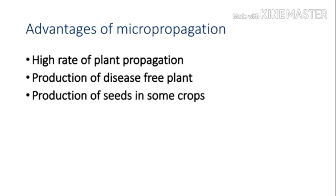The third point is production of seeds in some crops. Through micropropagation, the axillary bud proliferation method is suitable for seed production in some plants. This is required in certain plants where the limitations for seed production involve a high degree of genetic conservation, such as in cauliflower or onion.